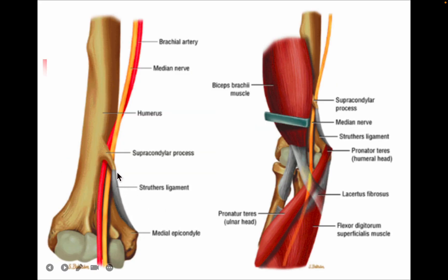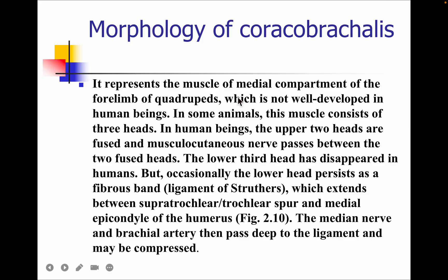The Struthers ligament arises from the supracondylar process and attaches to the medial epicondyle. The median nerve and brachial artery pass deep to this ligament. The morphological significance of coracobrachialis: it represents the muscles of the medial compartment of the forelimb, not well developed in humans. In some animals these muscles have three heads; in humans the upper two heads are fused and the musculocutaneous nerve passes between them. The lower third head has disappeared but occasionally persists as a fibrous span — the ligament of Struthers.